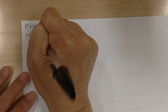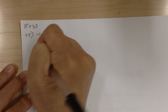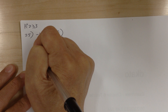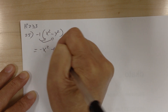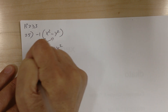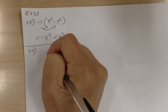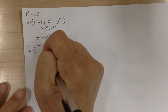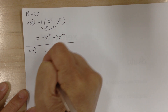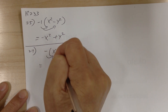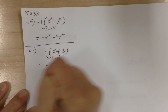Number 25. You have negative 1 times (x squared minus y squared). Distribute: negative 1 times x squared gives negative x squared. Distribute: negative 1 times negative y squared gives plus y squared. Number 27: you have negative x times (x plus 3). Distribute: negative times x is negative x, and negative times positive 3 is minus 3.